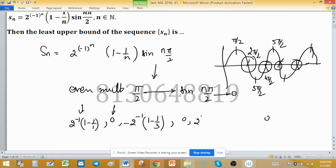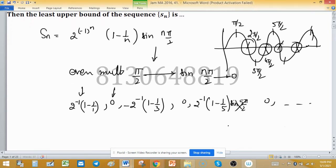The value of the fifth term will be 2 raised to the power -1 times (1 minus 1/5) times sin(5π/2). Sin(5π/2) is 1. So we have found the value of the terms in this sequence.